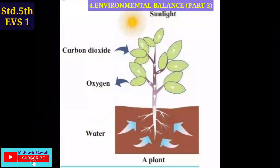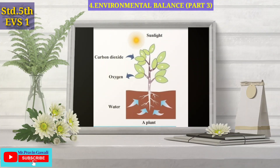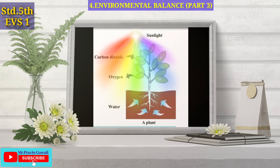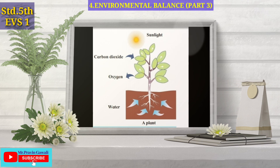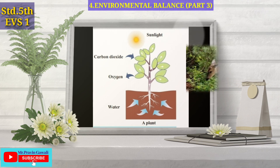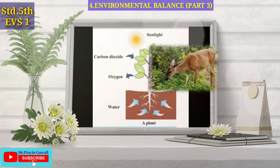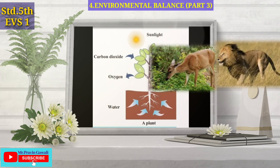Plants make their own food in the presence of sunlight, using water and carbon dioxide from the air. This means that plants are the main support of every food chain. Some animals eat plants, and other animals eat those animals that eat plants — so the common factor in every food chain is the plant.